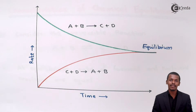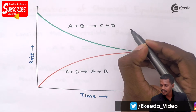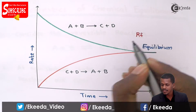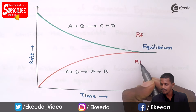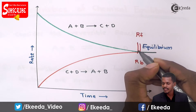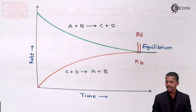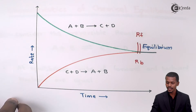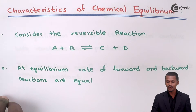There will be a certain point where the rate of forward reaction and the rate of backward reaction become the same. Representing forward rate as RF and backward rate as RB, at equilibrium RF equals RB. That is the first characteristic.